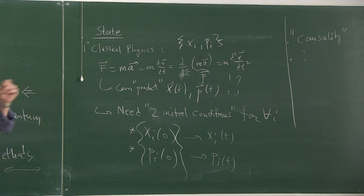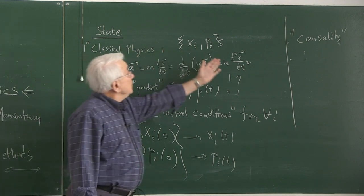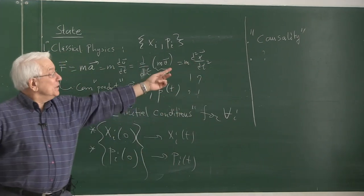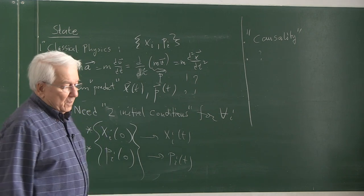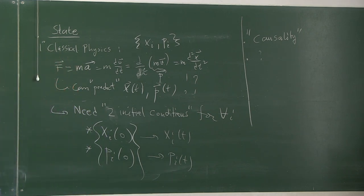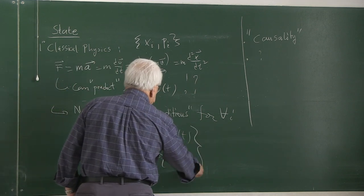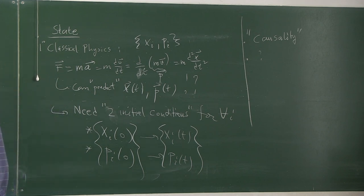The system is causal because the differential equation — second degree in time — enables this concept of state. It is causal because if I know the initial conditions, I can uniquely and precisely predict the future. That's the meaning of causality.